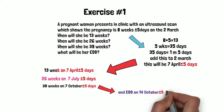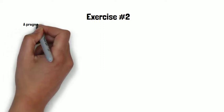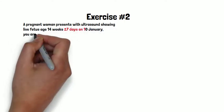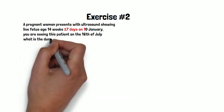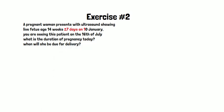Exercise two: a pregnant woman presents with an ultrasound showing a live fetus at 14 weeks plus or minus 7 days. You are seeing this patient on the 16th of July. What is the duration of the pregnancy today and when will she be due for delivery? We have two dates: the 16th of July when you are seeing the patient, and the 14th week of pregnancy which was established on the 10th of January.